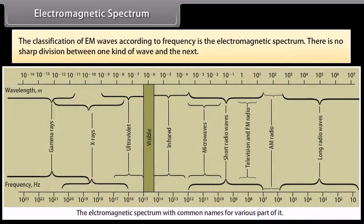Electromagnetic spectrum. The classification of EM waves according to frequency is the electromagnetic spectrum. There is no sharp division between one kind of wave and the next. The classification is based on how the waves are produced or detected. Let us describe these different types of electromagnetic waves in order of decreasing wavelengths.